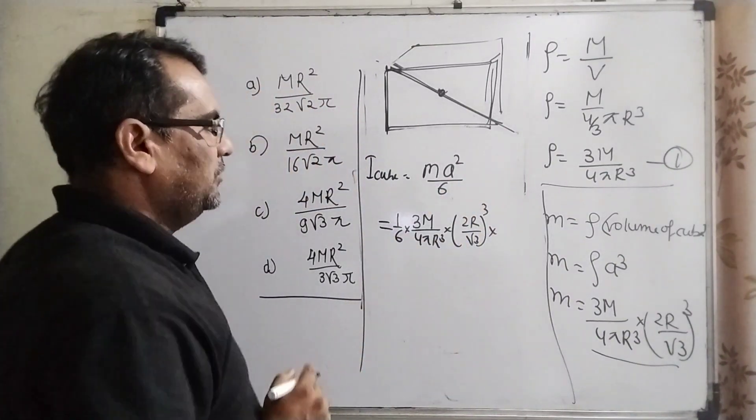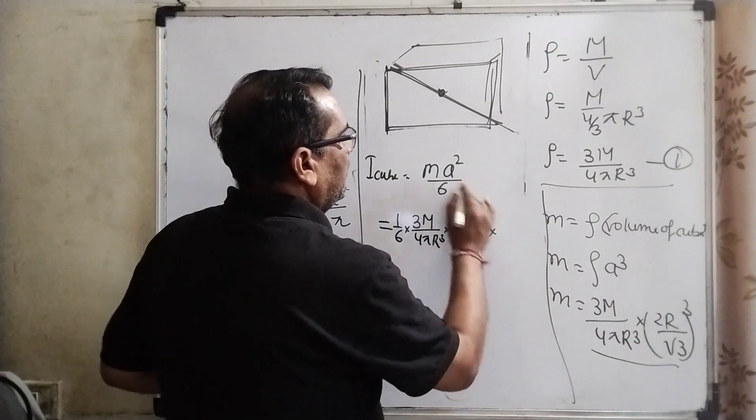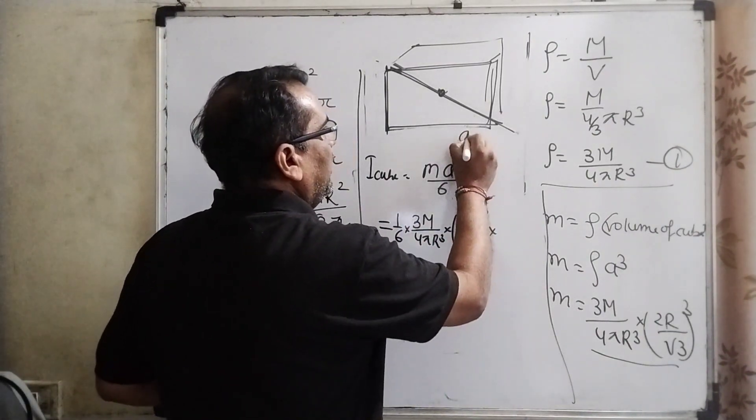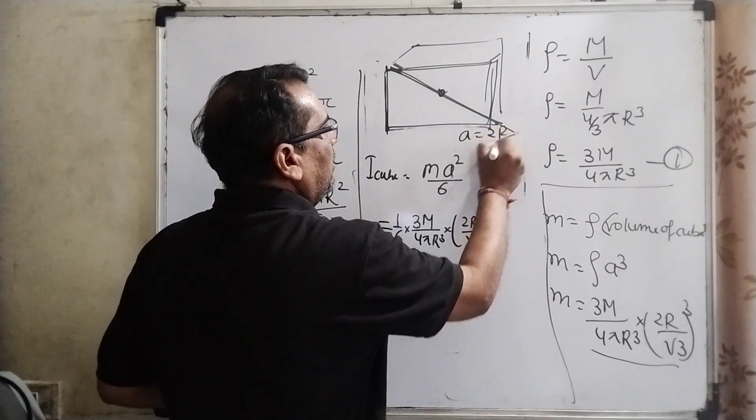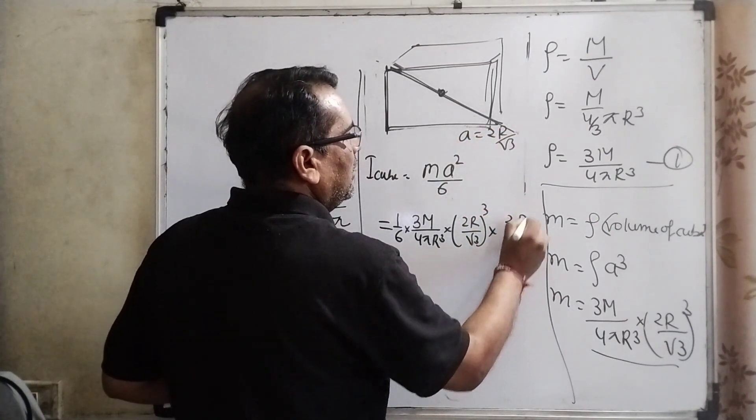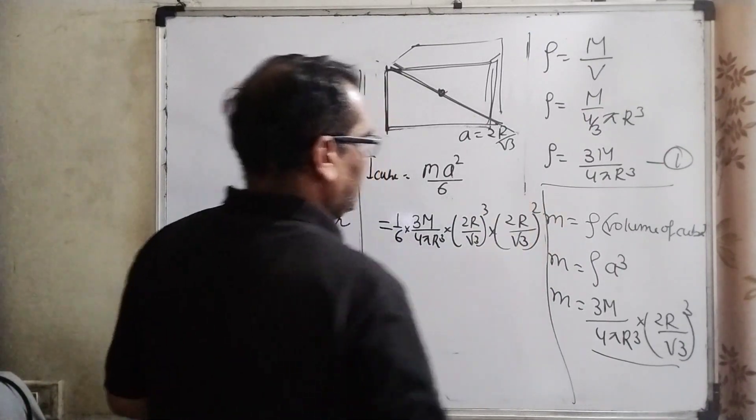And this is the m. And what is the value of a? a is 2R/√3. Then (2R/√3)².